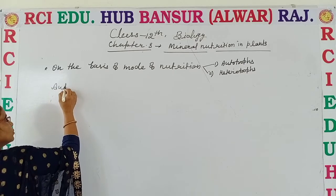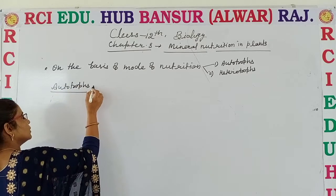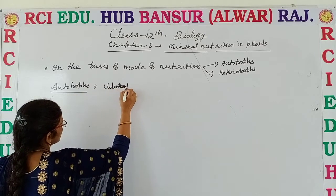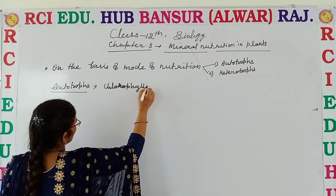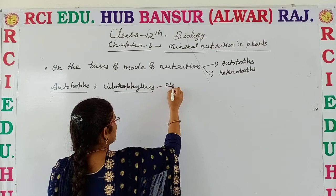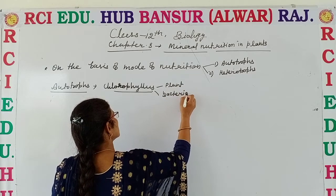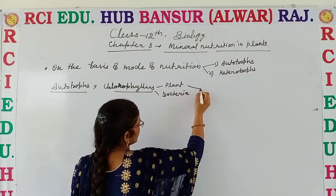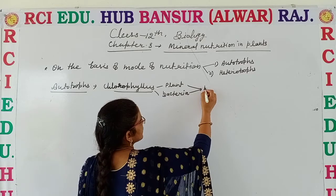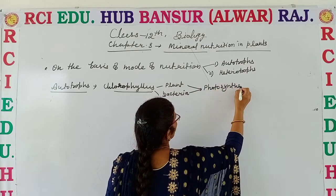If we discuss autotrophs, they are all chlorophyllous organisms. They may include plants and some bacteria. What they do is utilize chlorophyll in the presence of sunlight, and through the process of photosynthesis, they prepare their own food.